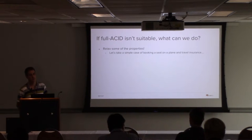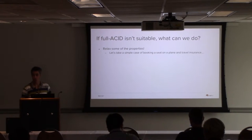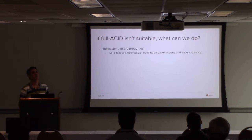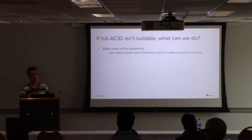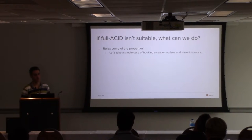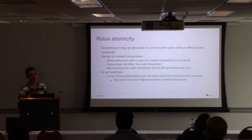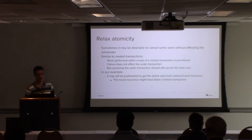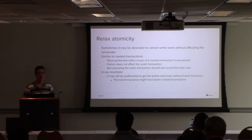If you can't use full ACID, the option is to look at those four properties that characterize all transaction models and think about which ones you can relax or even do without. To make it concrete, consider a simple case of booking a seat on a plane and travel insurance — you want to do those within a transaction. In a full ACID transaction, you would book both atomically — either both booked or neither booked. If you want to relax atomicity, you might cancel some work while allowing other work to continue. You might book the flight but not want to cancel it if you can't get travel insurance immediately, because you might be able to get it later.